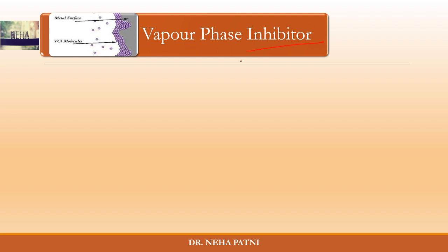In the last video on inhibitors, I discussed cathodic and anodic inhibitors. The third portion was vapor phase inhibitor, which I did not discuss, and you commented that you wanted a video on it. So hi, I'm Neha, and today I'm requesting you all to focus on vapor phase inhibitors, because this is equally important to cathodic and anodic inhibitors. Inhibitors are one important way to inhibit corrosion.